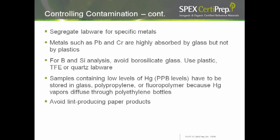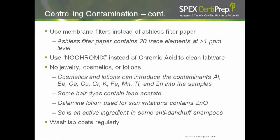Samples containing low levels of mercury, especially at parts per billion levels, have to be stored in glass, polypropylene, or fluoropolymer, because mercury vapors diffuse through polyethylene bottles. Avoid lint-producing paper products. Use membrane filters instead of ashless filter paper. Ashless filter paper contains 20 trace elements at greater than 1 ppm level.